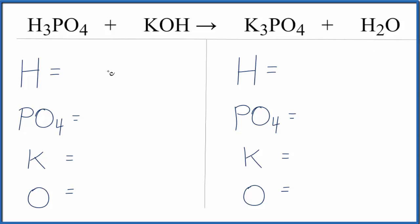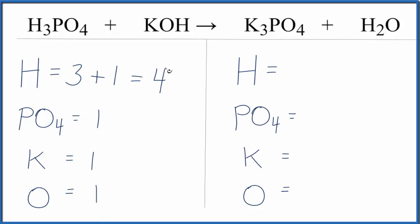We'll start by counting up the atoms on each side of the equation. We have three hydrogens here, plus we have one in this potassium hydroxide, so we have four hydrogens. I want to count this phosphate as just one item — I have a phosphate here and a phosphate here. That makes counting the oxygens easier. I have one potassium, and this oxygen here is separate from the PO4, so I'll count that. On the product side, I have two Hs, one PO4, three potassiums, and one oxygen over here.